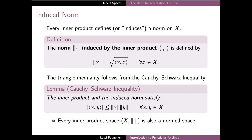The Cauchy-Schwarz inequality is indeed satisfied by every inner product and the norm that it induces. It states that the modulus of the inner product is always bounded from above by the product of the norms of the two elements. And using this inequality, the fact that the induced norm satisfies the triangle inequality can be proved in exactly the same way as is usually done in the case of the norm on Euclidean spaces.